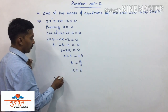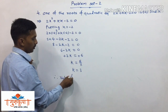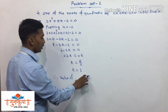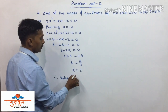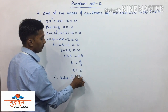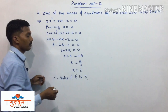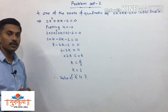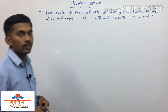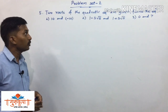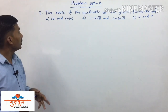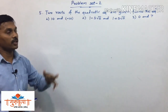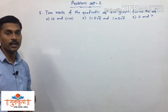Therefore, the value of k is 3. Now we will solve question number 5. In question 5 from problem set 2, two roots of a quadratic equation are given and we have to frame the quadratic equation.